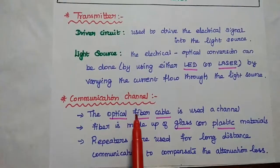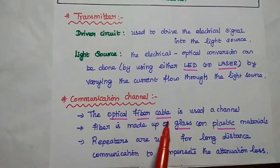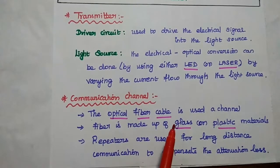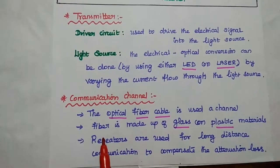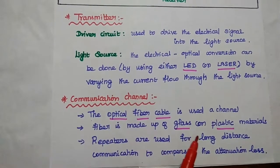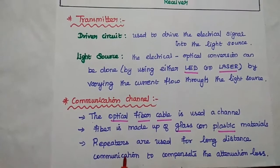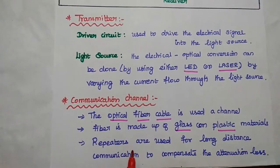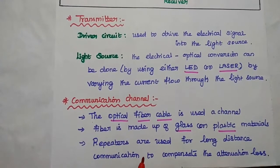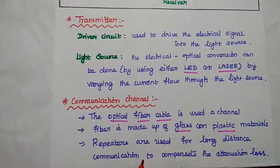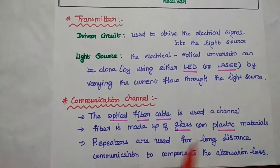The next component is the communication channel. The optical fiber cable is used as a communication channel. The fiber is made up of glass and plastic material. Repeaters or regenerators are mainly used for long distance communication to compensate the attenuation loss.